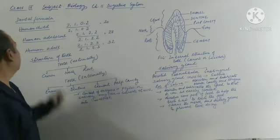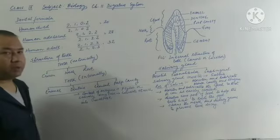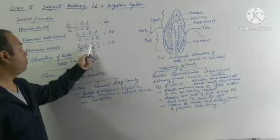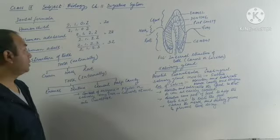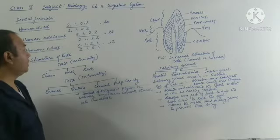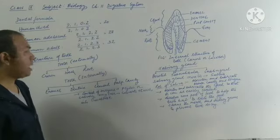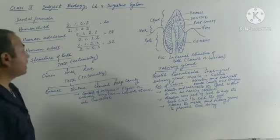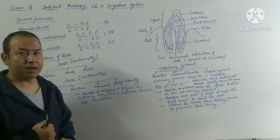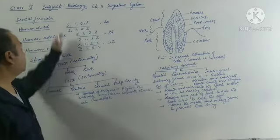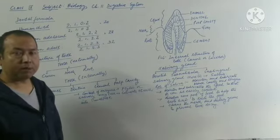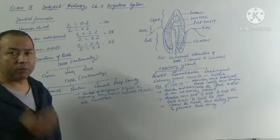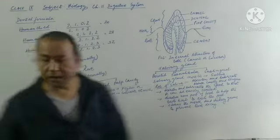In the human adult, in the upper jaw half: two incisors, one canine, two premolars, and three molars, because in adults the wisdom teeth are also developed — two wisdom teeth develop in each jaw, so in half only one wisdom tooth is counted. This makes the total 32 teeth. When writing the dental formula: first write incisors, then canines, then premolars, then molars. The numerator shows the number of teeth in half of the upper jaw, and the denominator shows the number in half of the lower jaw.